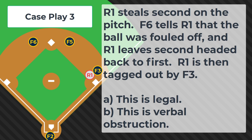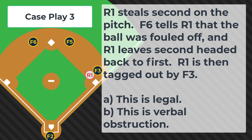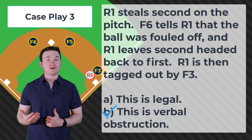Case play number three: R1 steals second on the pitch. F6 tells R1 that the ball was fouled off and R1 leaves second headed back to first. R1 is then tagged out by F3. The correct answer is that this is verbal obstruction and we would not allow the defense to get a cheap out on this.